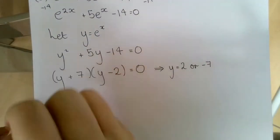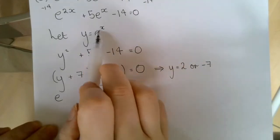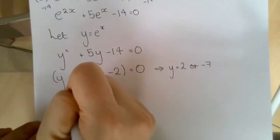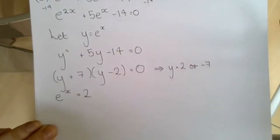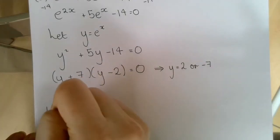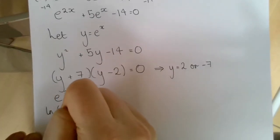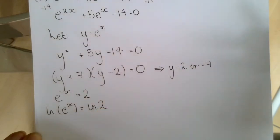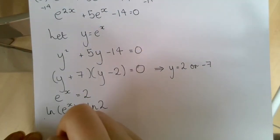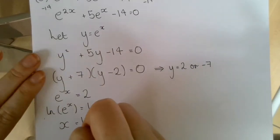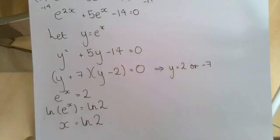If y equals 2, and y was equal to e to the power of x, then e to the power of x equals 2. Taking the natural logarithm of each side: ln of e to the power of x equals ln 2, and since that is the inverse, we get x equals ln 2.